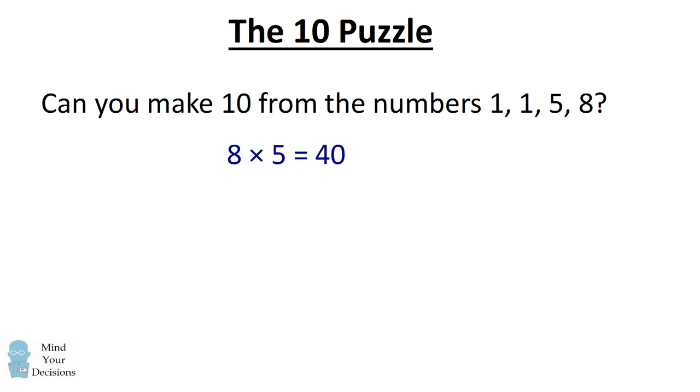If we multiply 8 and 5 we get to 40. 1 and 1 make 2. So we can put this all together and say 8 times 5 divided by 1 plus 1 will equal 20.